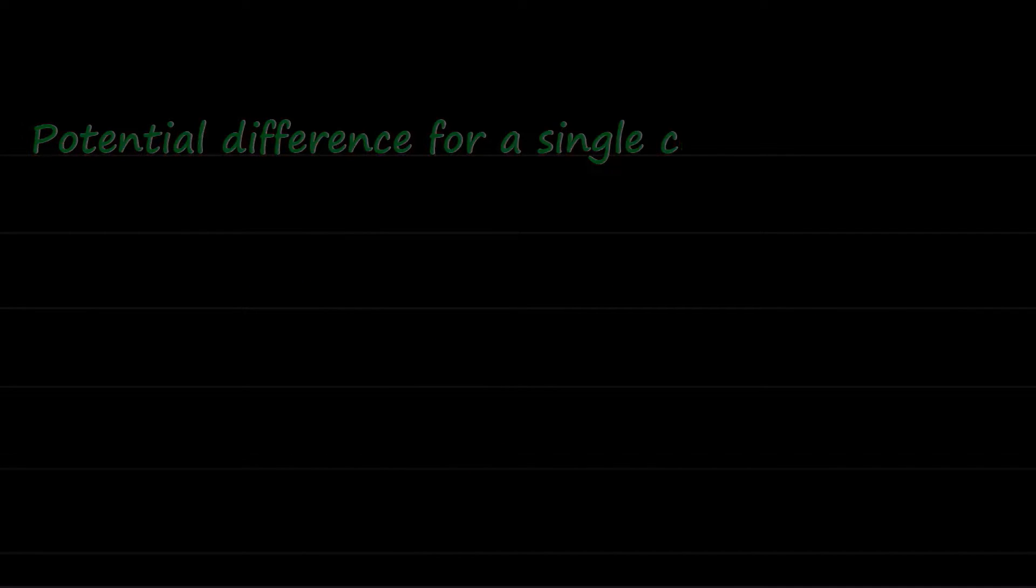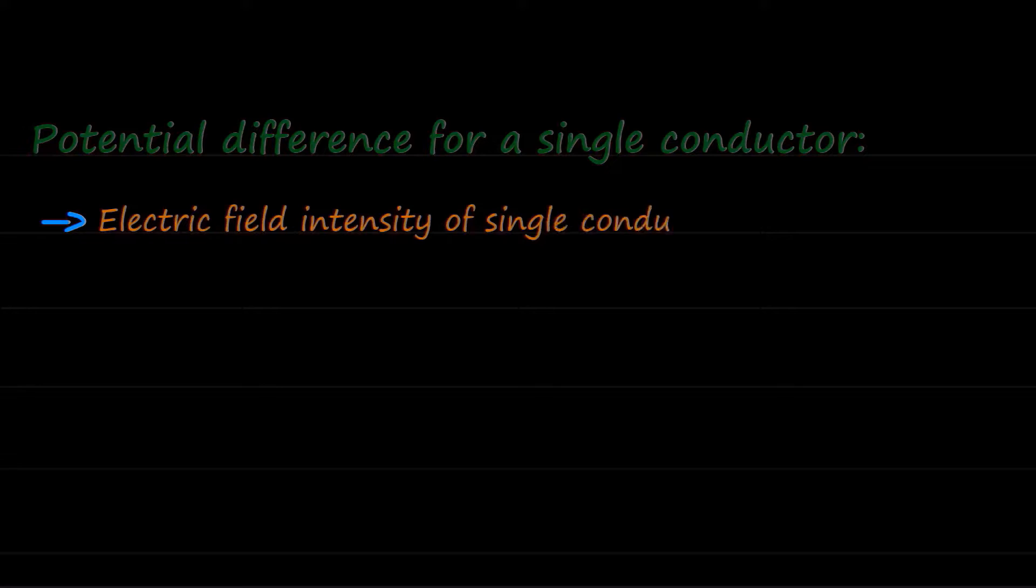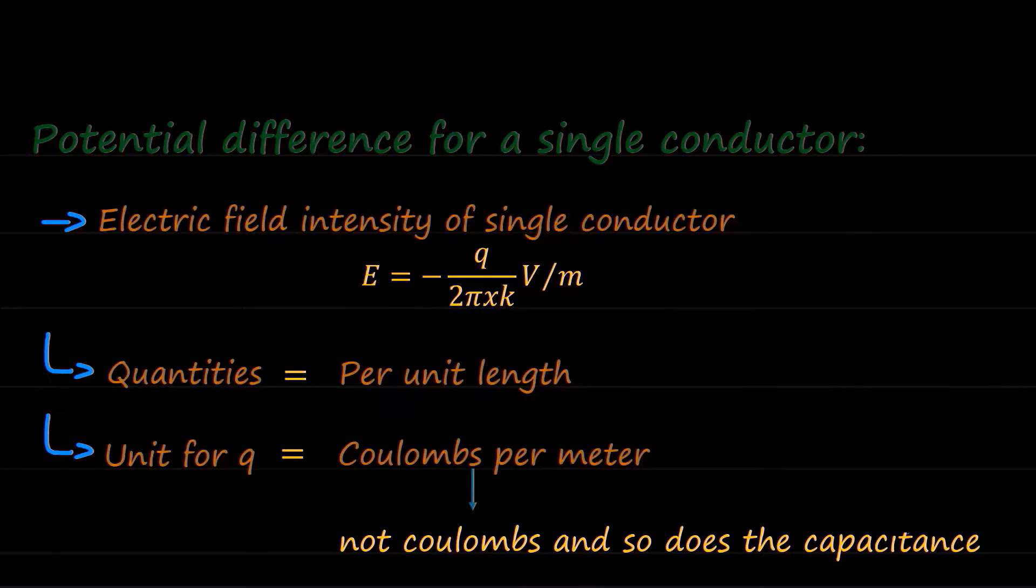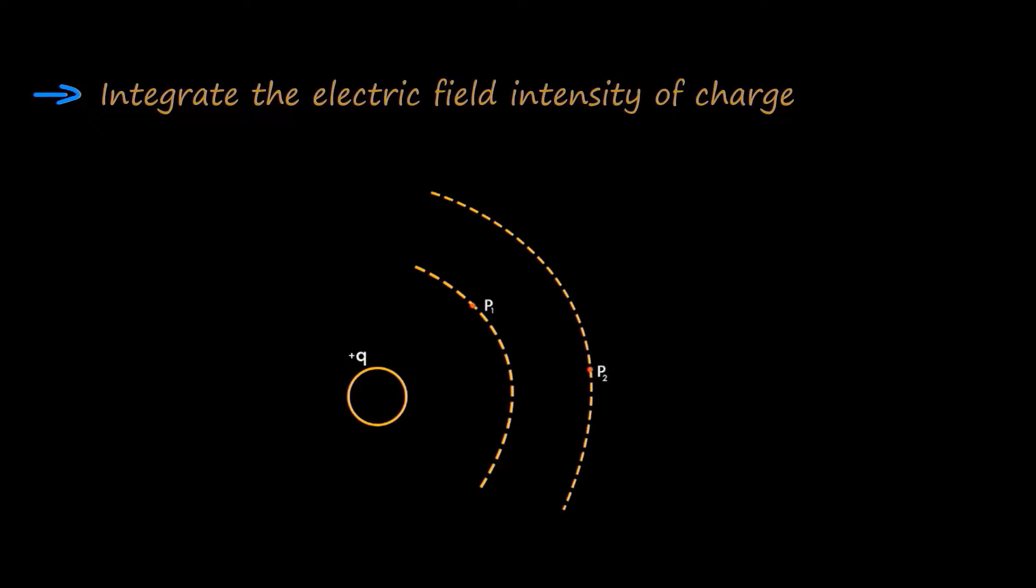Potential difference for a single conductor: The electric field intensity of single conductor can be written as e equals minus q over 2 times pi times x times k. It is to be noted that all the quantities are taken as per unit length, which means the unit for q is coulombs per meter, not coulombs, and so does the capacitance. Now, to find the potential difference or the voltage drop, we have to integrate the electric field intensity of charge q over the two points p1 and p2, having distances d1 and d2 between which the potential difference is to be determined.